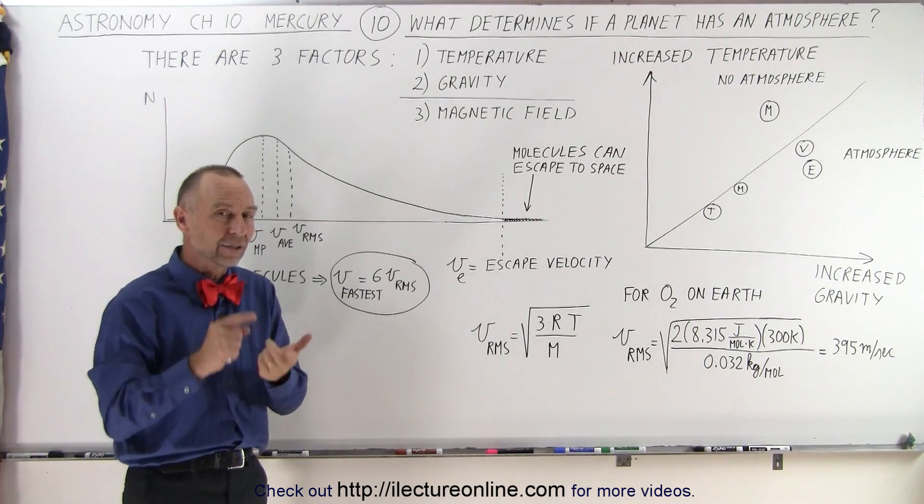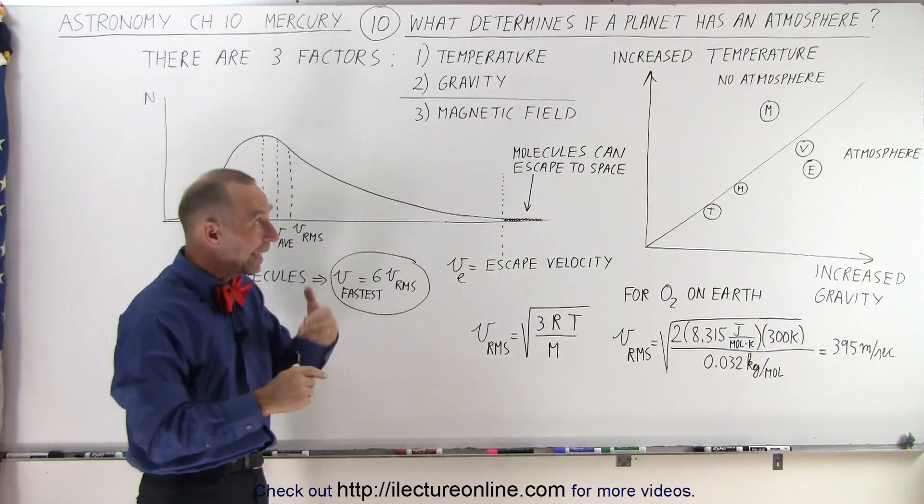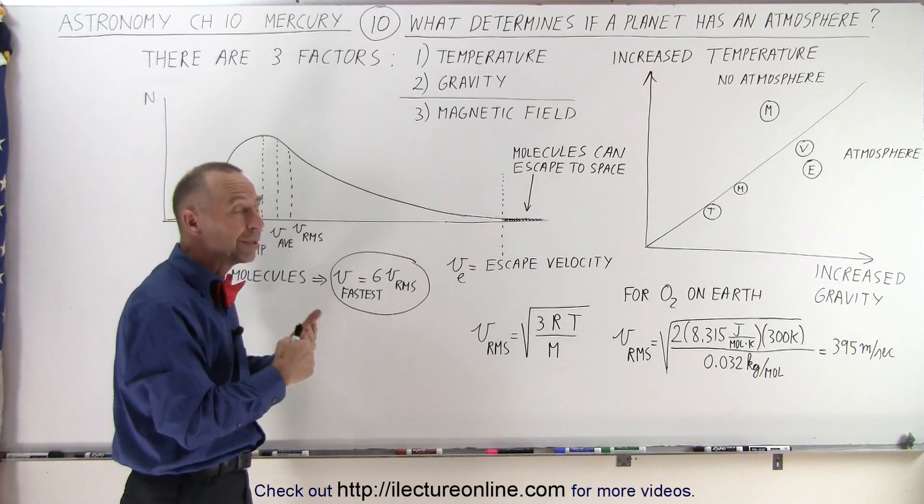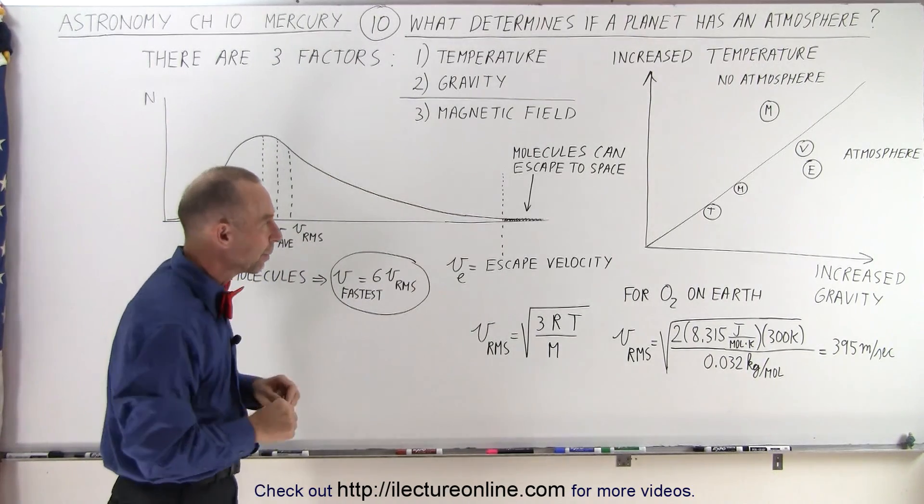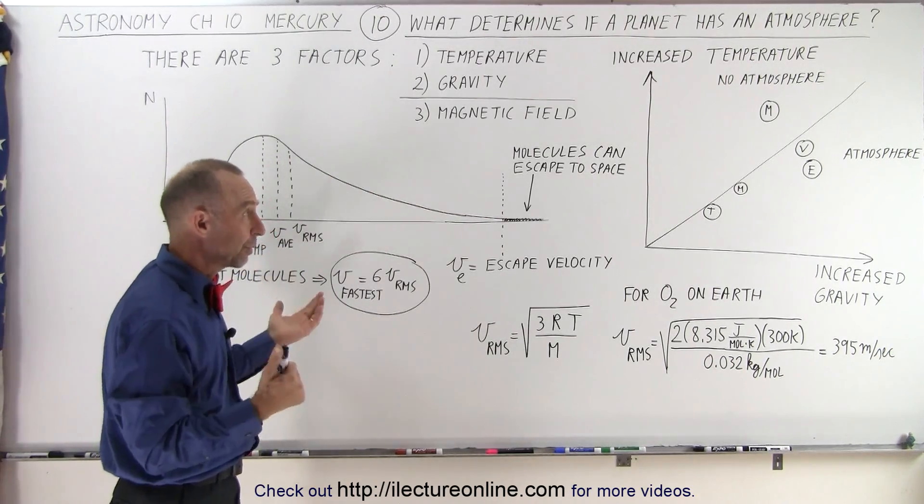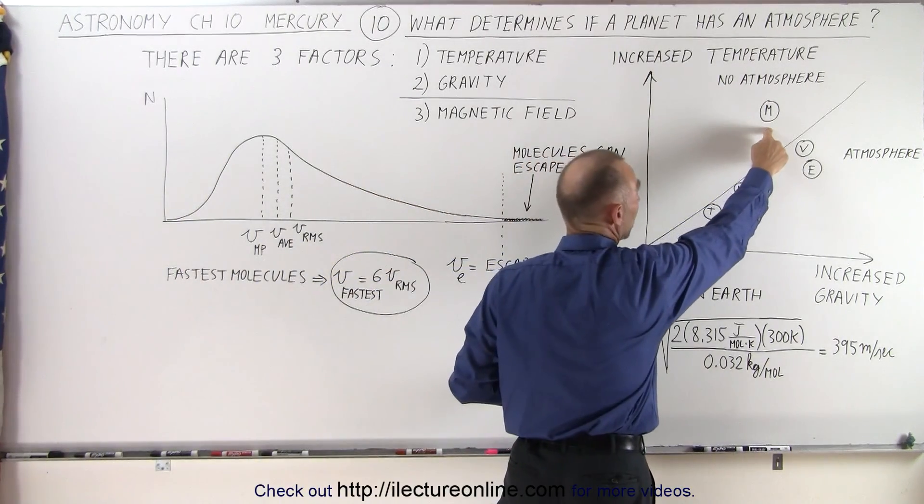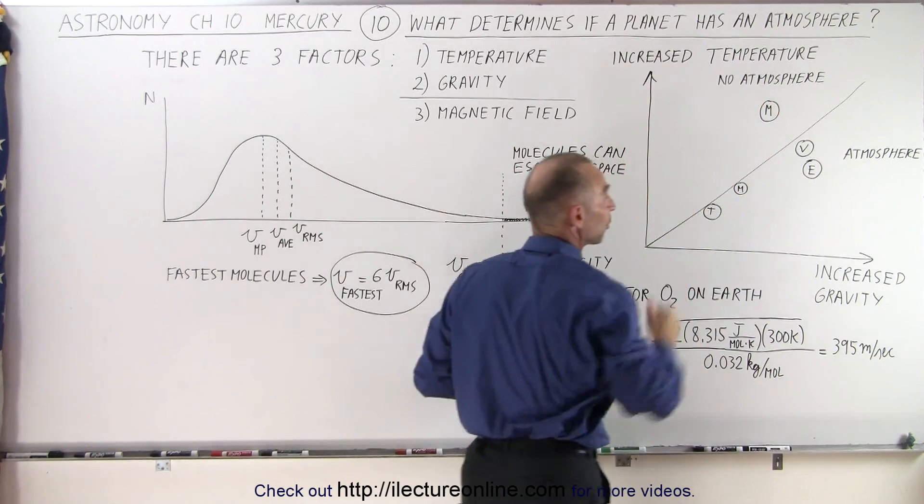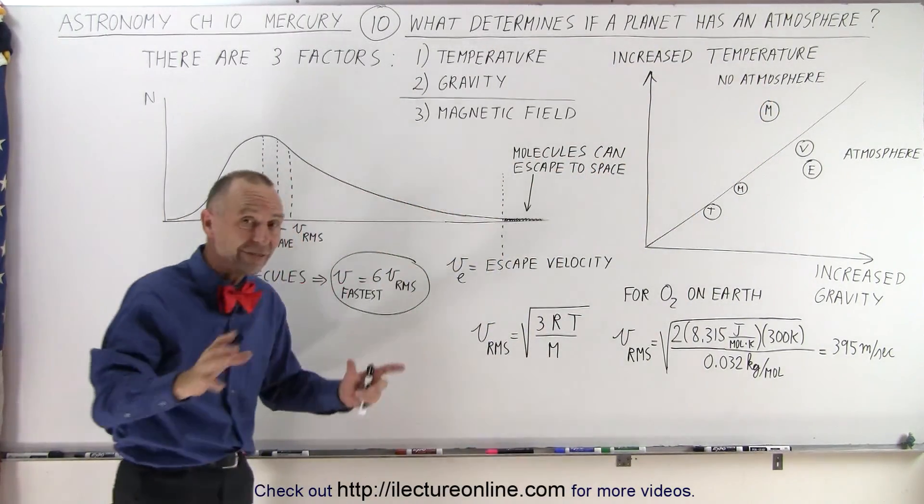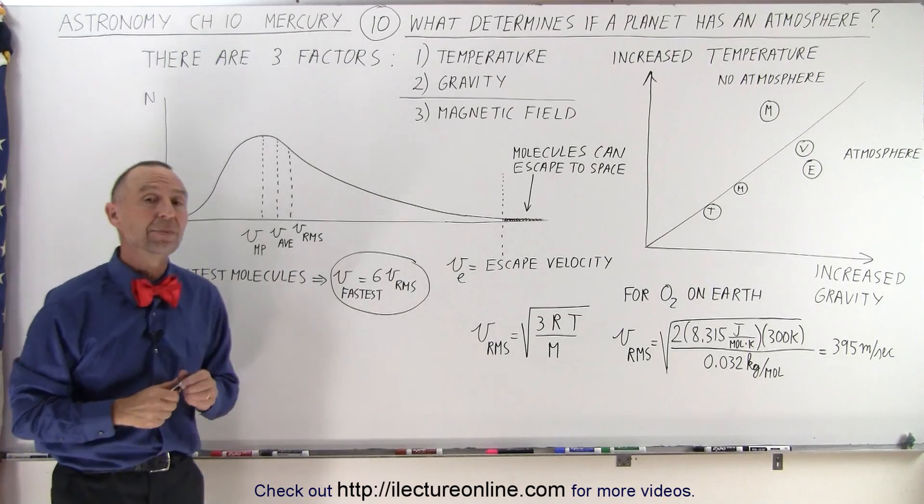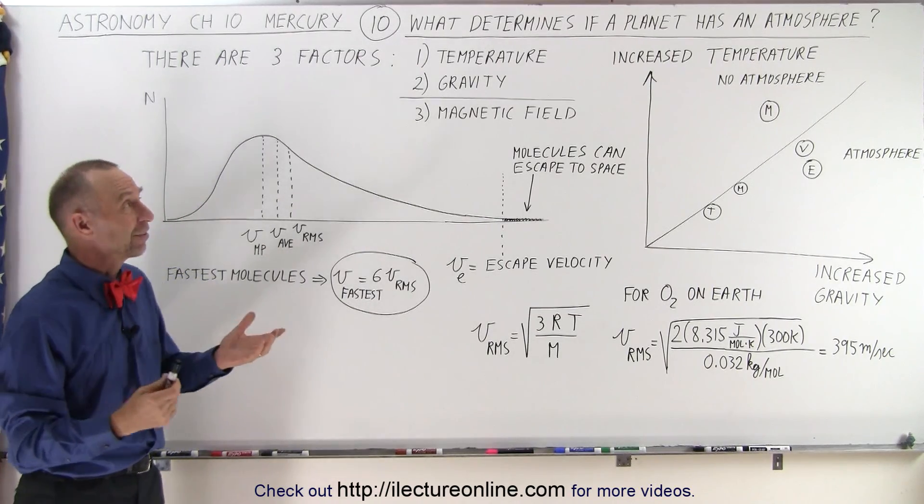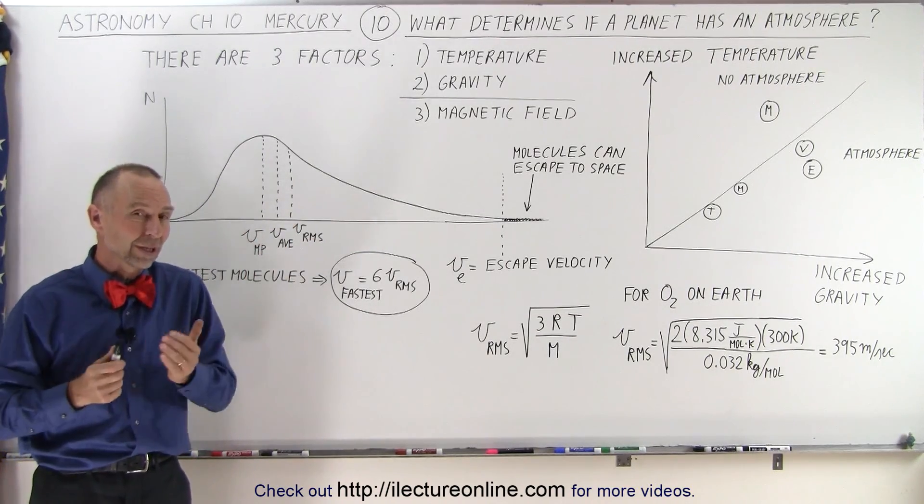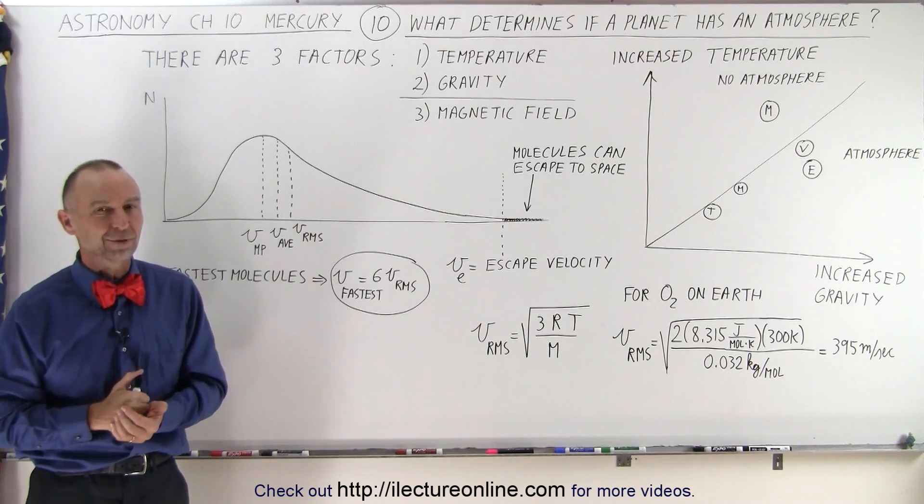And so that's the key. Temperature, gravity, and to a third degree, the magnetic field as well. And we'll get into that a little bit more with Mercury. So Mercury was simply not big enough, so therefore it didn't have a strong enough gravitational field. It was too close to the Sun, so the temperature was so hot that the molecules moved really fast, and they just simply escaped into space. And that's what defines and determines whether or not a planet will have an atmosphere.